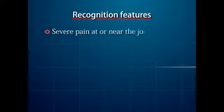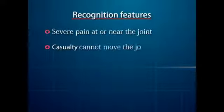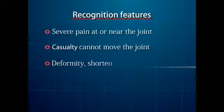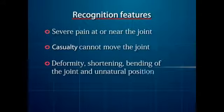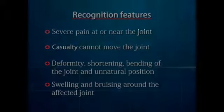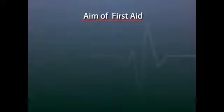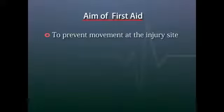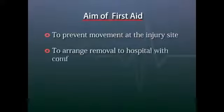Dislocations. A dislocation is the displacement of one or more bones at the joint. This can be caused by a strong force displacing the bone into an abnormal position or by violent muscle contraction. Recognition: severe pain at or near the joint, the casualty cannot move the joint, and there is deformity, shortening, or bending of the joint. The aim of first aid in such situations is to prevent movement at the injury site and to arrange removal to hospital with comfortable support.